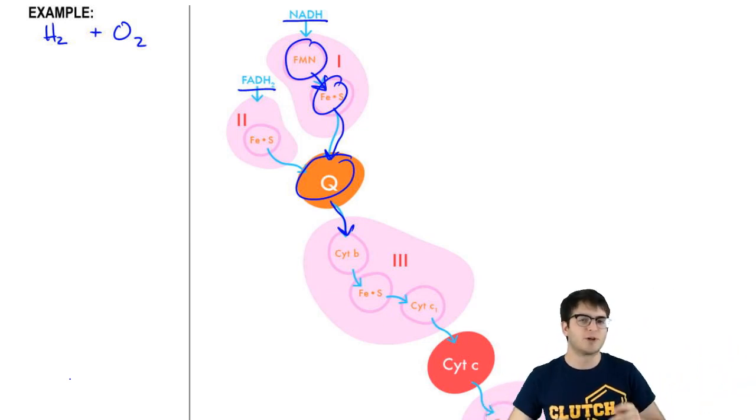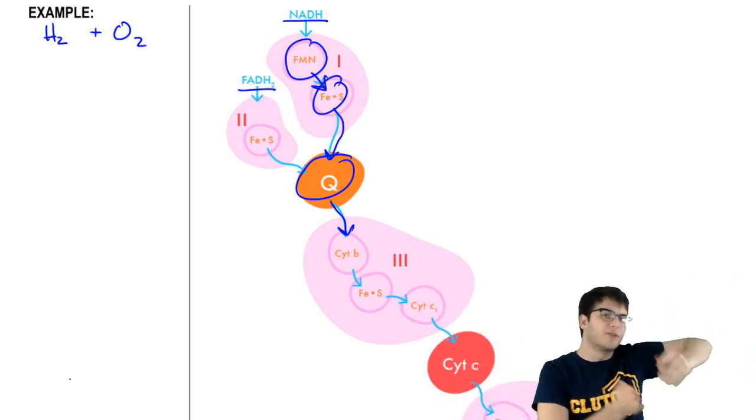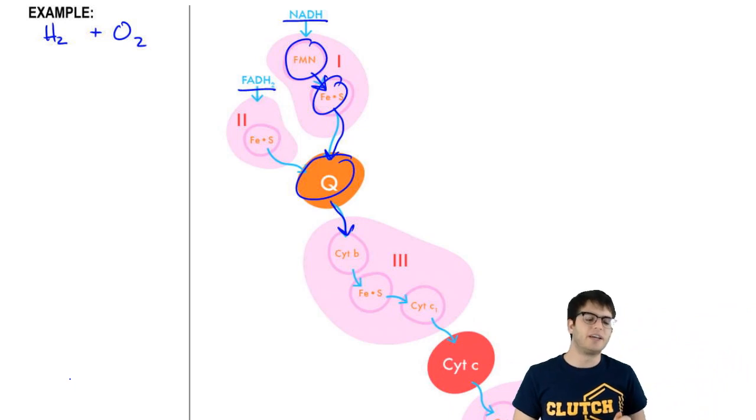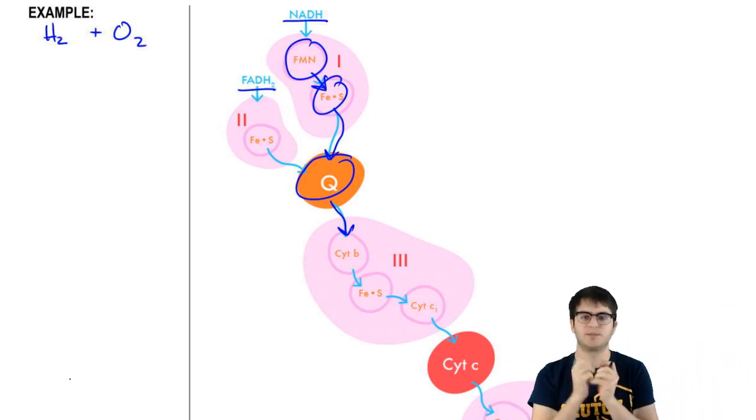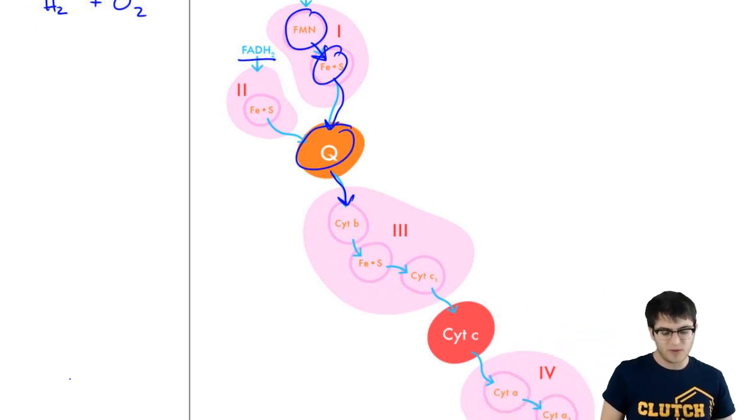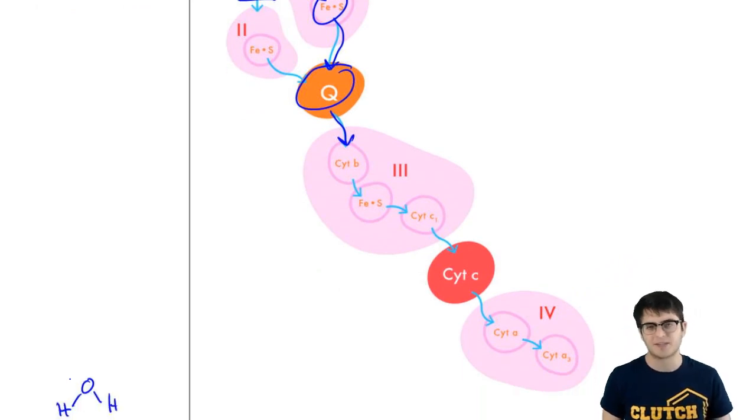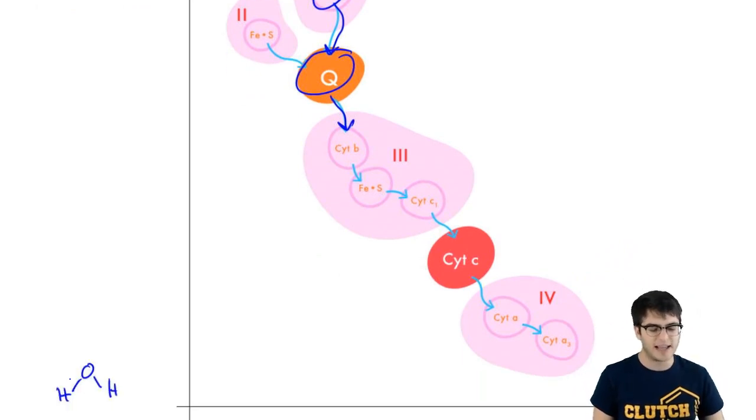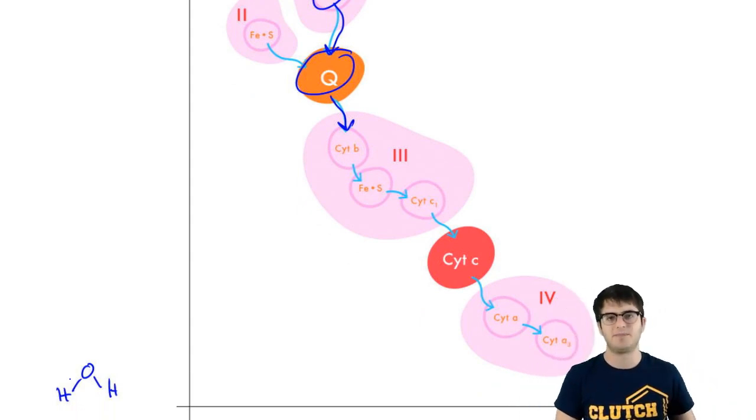than it could if the cell just had that stuff go through that one big explosive reaction that releases a lot of energy. So the whole point here is to milk as much energy as possible out of those electrons. And we're going to talk about how that energy is used on the next page.